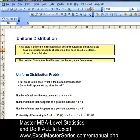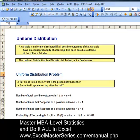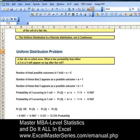Let's take a look at a typical problem involving the uniform distribution. A fair die is rolled once. What's the probability that either a 2 or a 5 will appear on top after the roll? Here's how we do it.